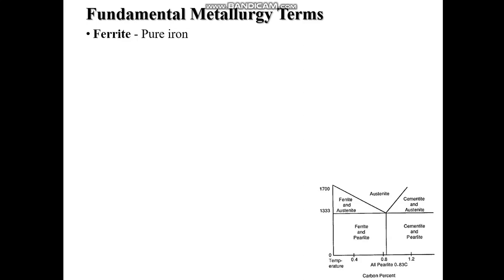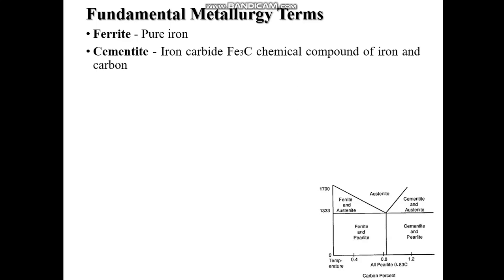Cementite, or iron carbide, is a chemical compound of iron and carbon. It contains 6.67% carbon by weight. It is the hardest structure that appears in the iron carbon equilibrium diagram. Cementite has an orthorhombic crystal structure and is extremely hard and brittle compared to austenite and ferrite. It is magnetic below 210 degree Celsius.